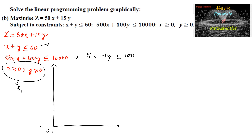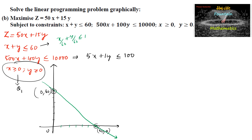For the first inequality x + y ≤ 60, we can write x/60 + y/60 ≤ 1. So the x-intercept is (60, 0) and the y-intercept is (0, 60). The line passes through these two points. Testing the origin: 0 + 0 ≤ 60 is true, so the solution region is towards the origin.